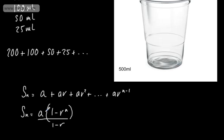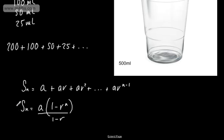Where a was the first term, r was the ratio and n was the number of terms that we had. What we're going to do in this video is look when n gets big or tends to infinity.